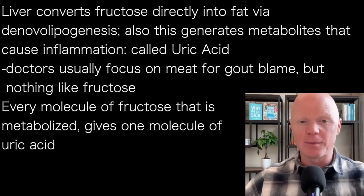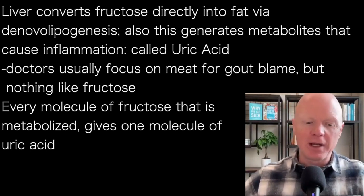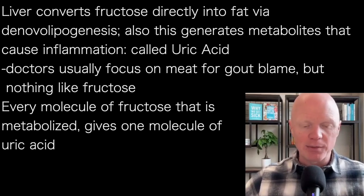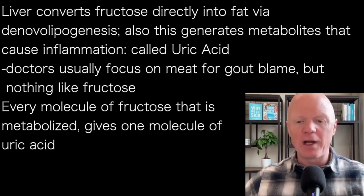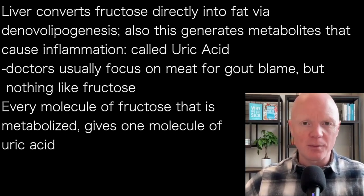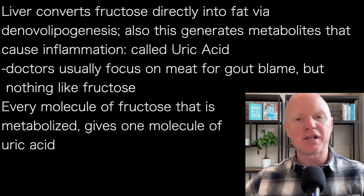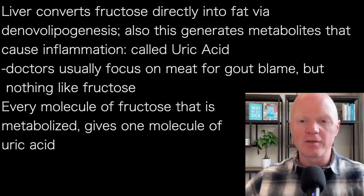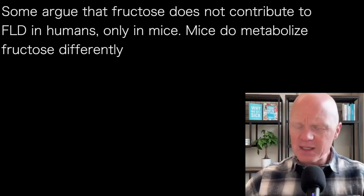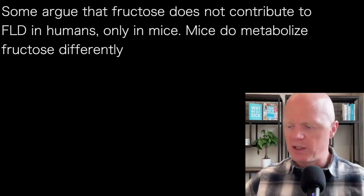Fructose metabolism in the liver also generates metabolites that can trigger inflammation — specifically uric acid. One of the great tragedies of the modern view of gout, which is a problem of uric acid accumulation, is that we always focus on meat. While meat may contribute somewhat in some people, it is nothing compared to fructose. Every molecule of fructose that the liver metabolizes gives rise to a molecule of uric acid — making it an enormous contributor.